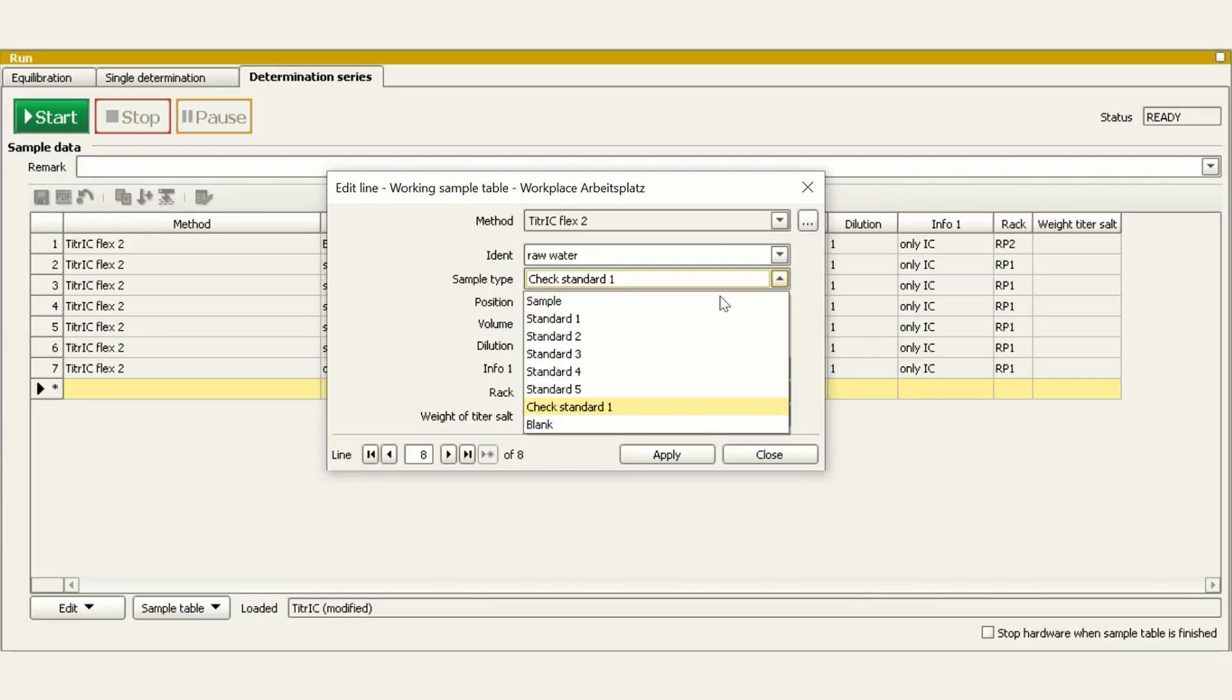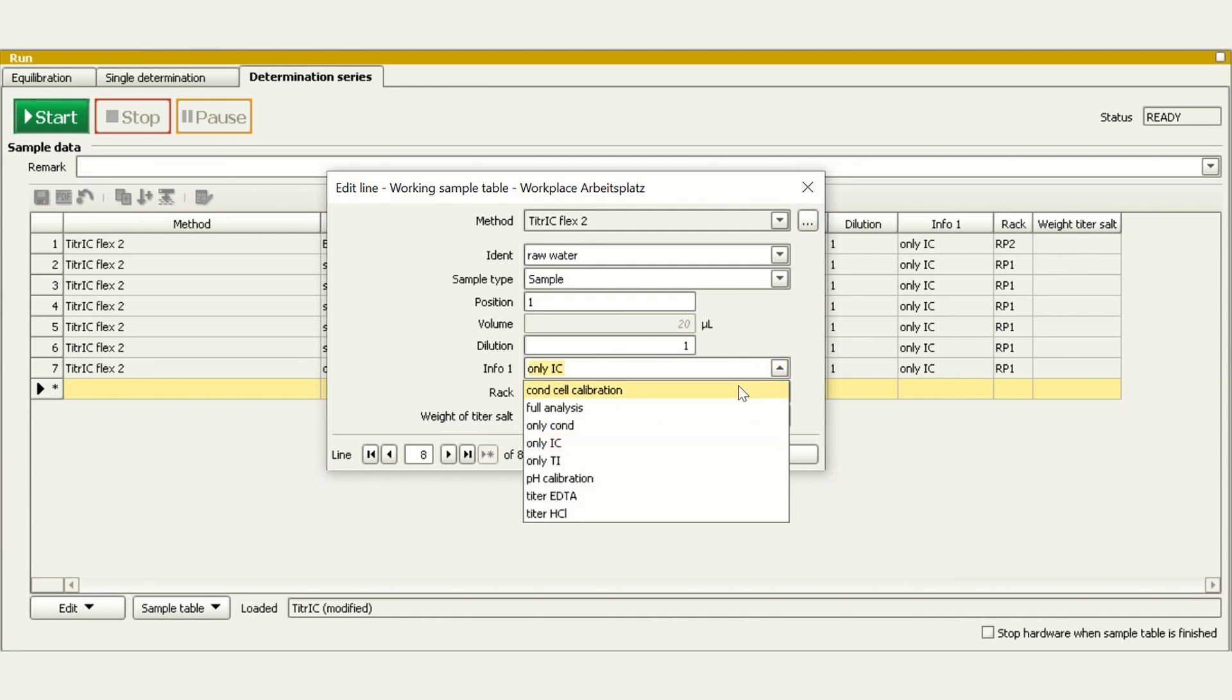For each sample you can decide whether to perform only titration, conductivity measurement or ion chromatography, or to run all of these methods combined. The system then automatically handles the determinations. It's as simple as that.